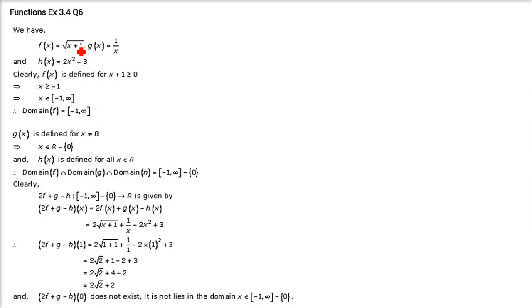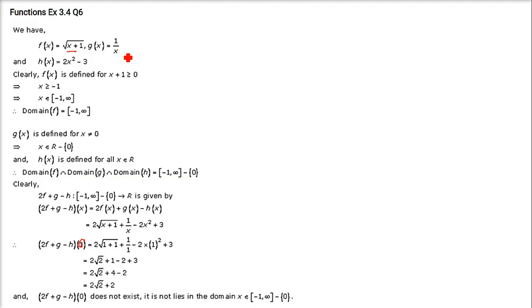Here f(x) is equal to under root x plus 1 and g(x) is 1 by x. So what we have to find is 2f plus g minus h at 1, and 2f plus g minus h at 0. So when you have f and g in plus and minus, we have to find out the domain of each one and then intersect them.